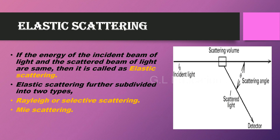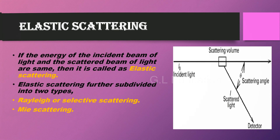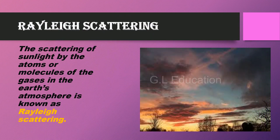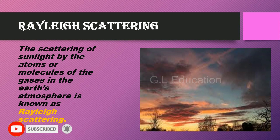If the energy of the incident beam of light and the scattered beam of light are the same, then it is called elastic scattering. Scattering of sunlight by the atoms or molecules of the gases in the earth's atmosphere is known as Rayleigh Scattering.